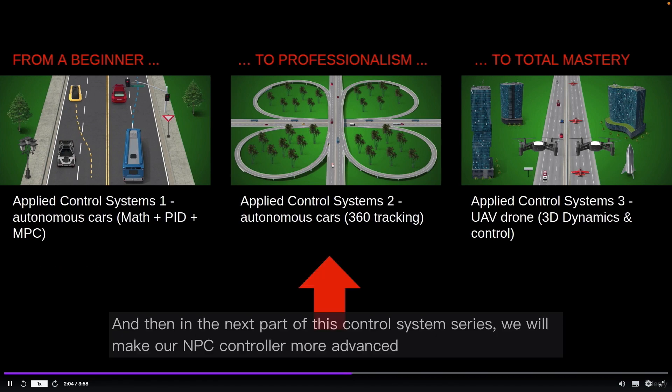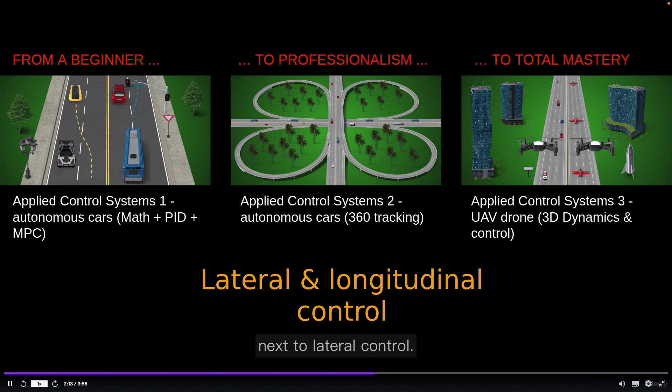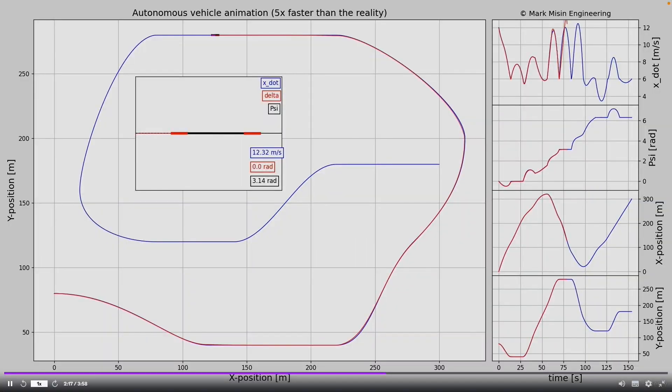And then, in the next part of this control system series, we will make our MPC controller more advanced. Next to lateral control, it will also control the car longitudinally. In the end, the vehicle will be able to track a general trajectory on a 2D plane.